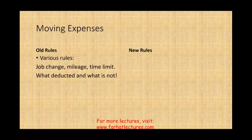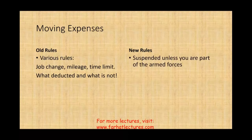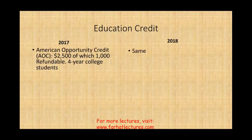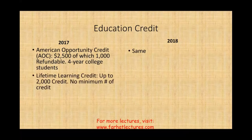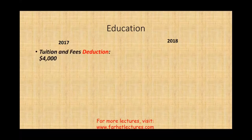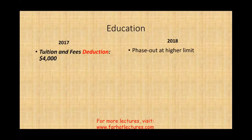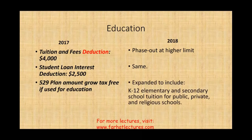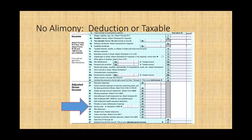Moving expense deductions — which had various rules around job changes, mileage, and time limits — are now suspended, unless you are a member of the armed forces. For education: the American Opportunity Credit of $2,500 (of which $1,000 is refundable) for the first four years of college is unchanged. The Lifetime Learning Credit up to $2,000 is unchanged. The tuition and fees deduction of $4,000 has an increased phase-out. Student loan interest deduction of $2,500 is unchanged. And 529 plan funds have been expanded to cover K-12 elementary and secondary school tuition at public, private, and religious schools.